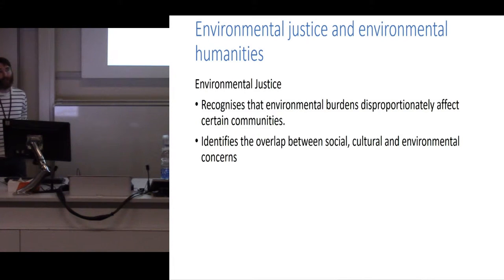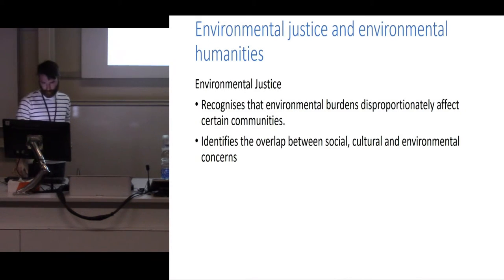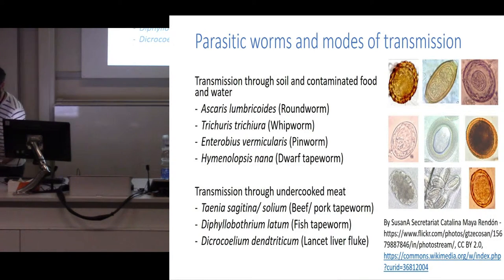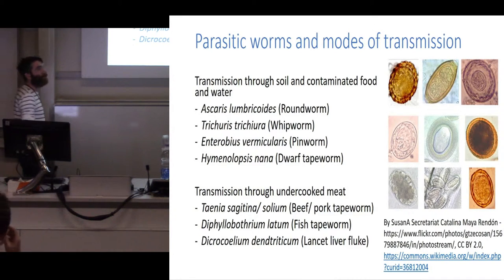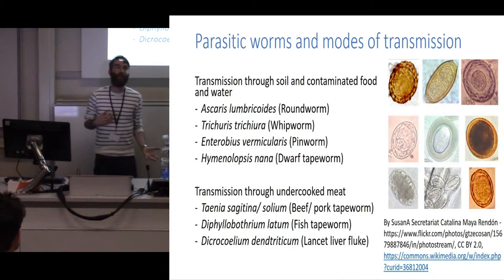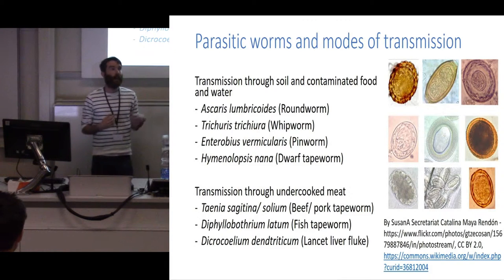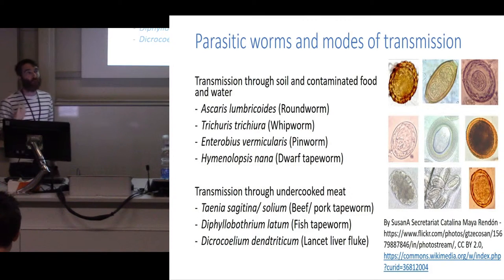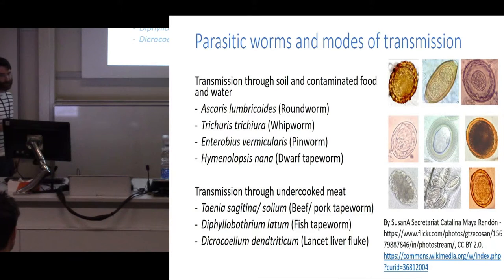Parasitic worms are a valid source of evidence for environmental justice because their transmission generally relates either to poor environmental conditions — low hygiene, poor quality water — or to poor food, in particular undercooked meat. So we have some of the most common types, and I apologize — I am going to be using a few Latin names in this talk.